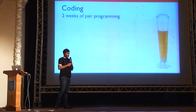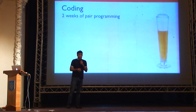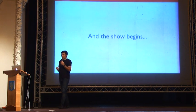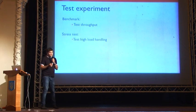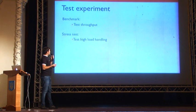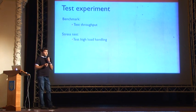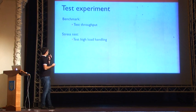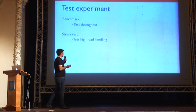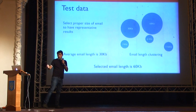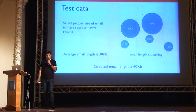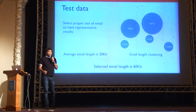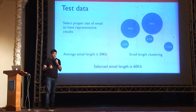Then we started coding — actually the simplest part — which took two weeks of pair programming. The most interesting part was preparing the test experiment. We created a set of scripts to test throughput and high load. The most important factor is the representativeness of your test data: you should choose data representative of your real system to get meaningful results.